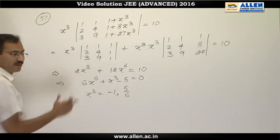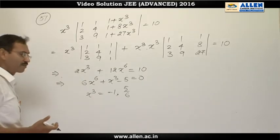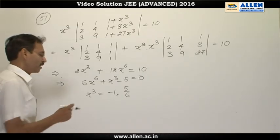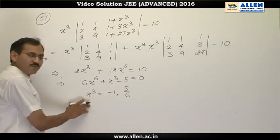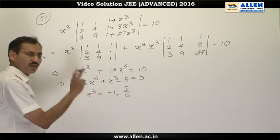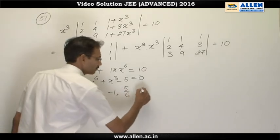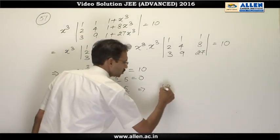So as to arrange the sum and product, or we can solve it using factorization or the quadratic formula. Now x cube is a one-to-one function. So x cube equals minus 1 will give one real solution and one real solution will be obtained by x cube equals 5 by 6. So we have two real solutions. The answer is 2.